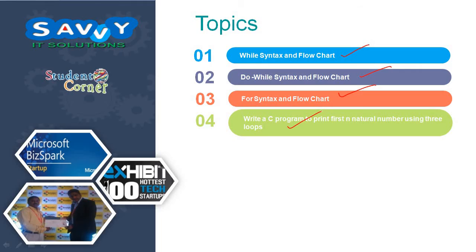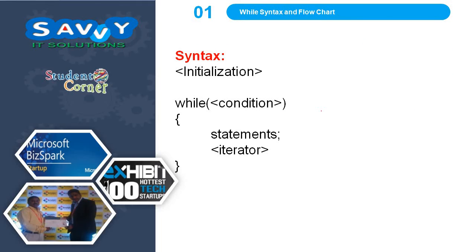The syntax for the while loop: if you take any loop, initialization, condition, and iterator are common. The remaining statements change from one skeleton to another. The first one is initialization, followed by while we check the condition. If this condition is true, the statements are executed until the condition fails. The iterator increments or decrements the value, and sometimes randomly changes the value.